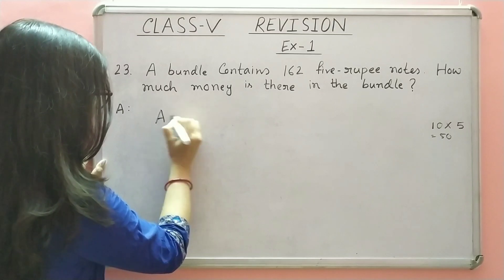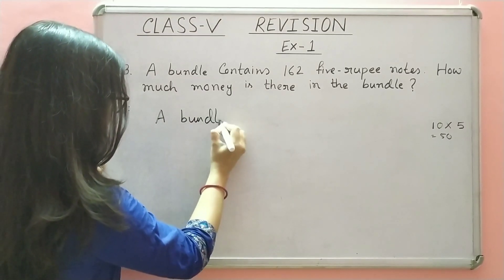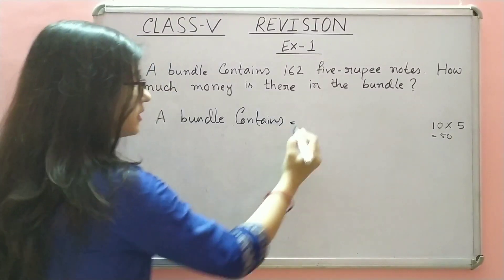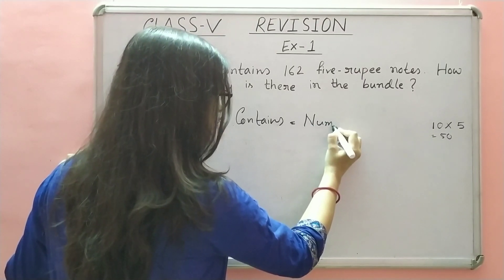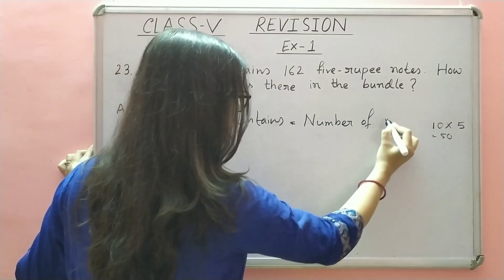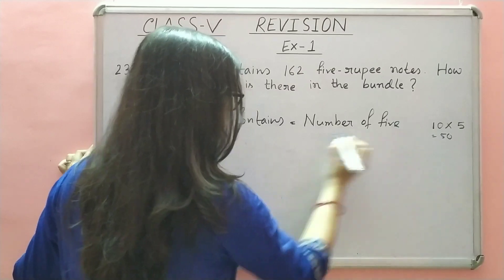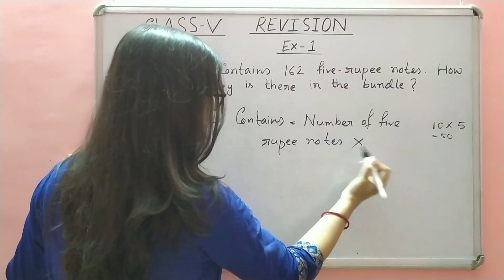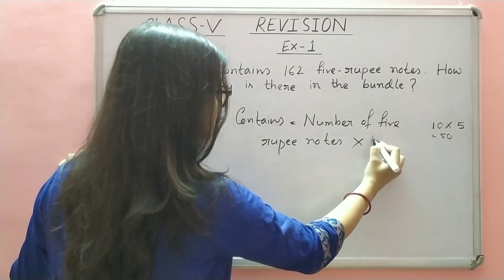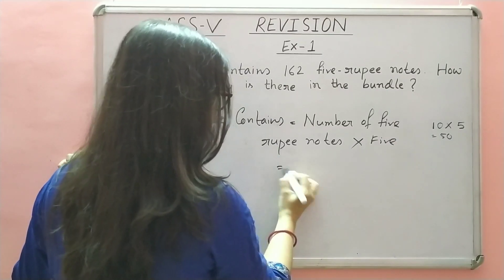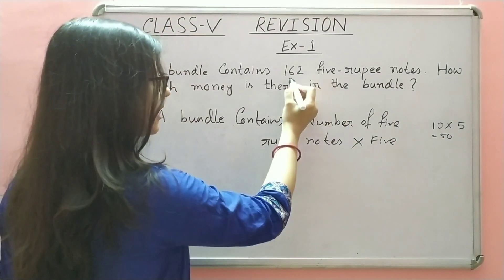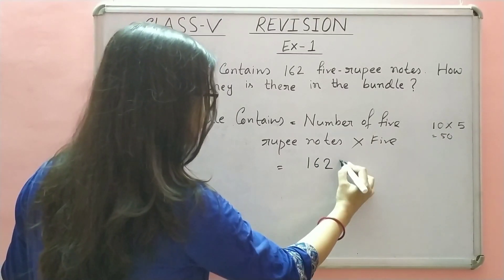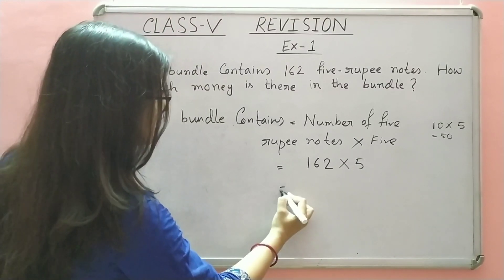Toh first, a bundle contains... Number of 5 rupee notes, into 5. Toh kya ho jayega? Number of 5 rupee notes kitna hai? 162. So, hum likhenge 162 into 5. Abhi multiply karenge.